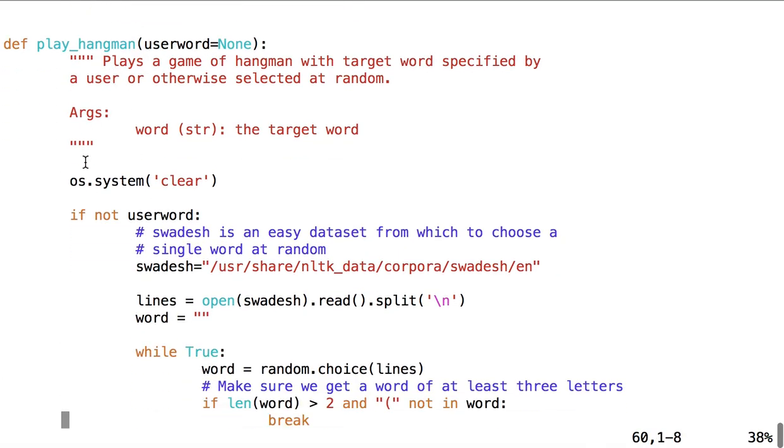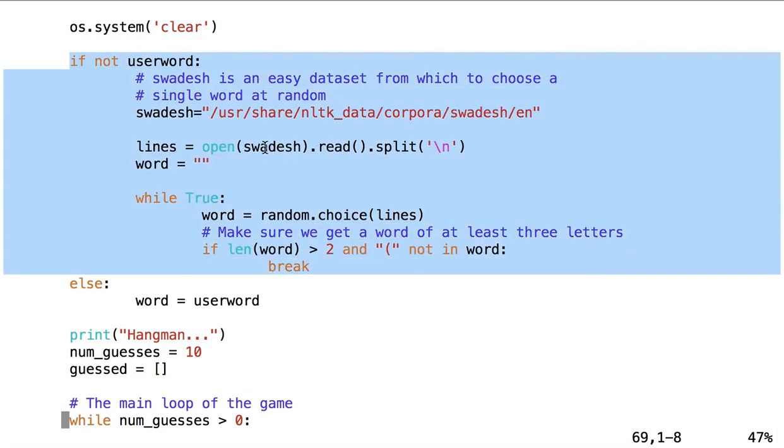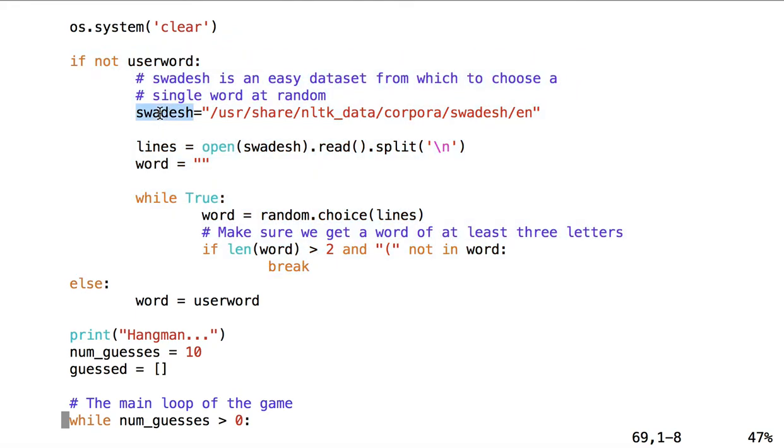So when we come down here, os.system clear, that just clears the screen. If not user word, so this is saying if user word is none, if nothing is stored at user word. So if not user word, we're going to choose a random word from the swadesh list, which is a good source for just single words. And all we're doing here is making a random choice of lines in the swadesh file, which is one word per line. And making sure that we have a long enough word, and that there is not an unwanted character like a parenthesis in that word, and then breaking when we have a word that works.